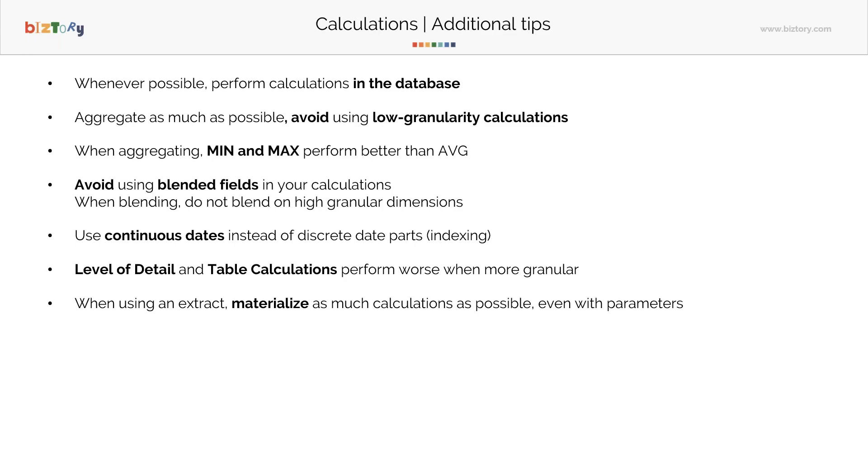Make sure that when you're writing a level of detail calculation or a table calculation, don't try to stretch it too far. Just ask yourself: what is the level of detail I really need in this visualization? And use that instead of adding transaction ID to your level of detail, for example.